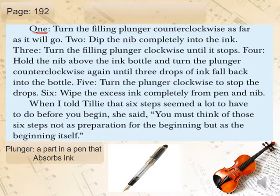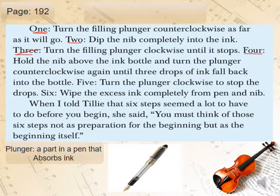Step one: turn the filling plunger counterclockwise as far as it will go. Step two: dip the nib completely into the ink. Step three: turn the filling plunger clockwise until it stops. Step four: hold the nib above the ink bottle and turn the plunger counterclockwise again until three drops of ink fall back into the bottle. Step five: turn the plunger clockwise to stop the drops.